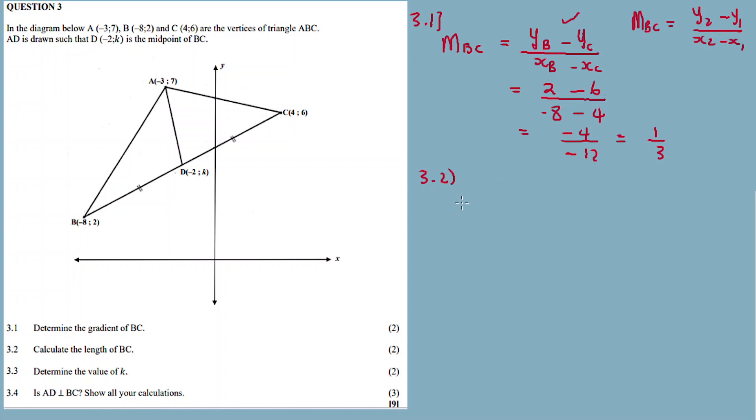They want the length of BC. This time we calculate the length using the formula: square root of, open bracket, xB minus xC squared, plus yB minus yC squared. Or the square root of x2 minus x1 squared plus y2 minus y1 squared.